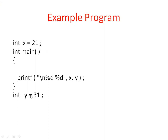I have one more variable here. After the main function, I defined one more variable — int y equals to 31. Now both are defined outside the main. One is defined before the main and the other one is defined after the main, but both have global scope.